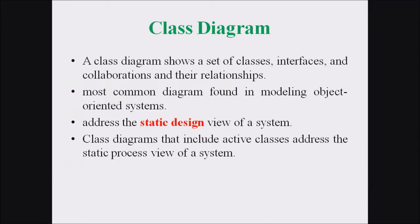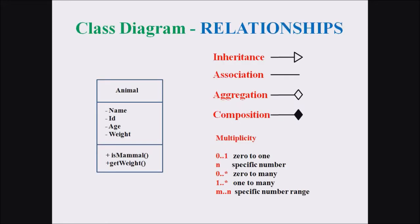A class diagram shows a set of classes, interfaces, and collaborations and their relationships. The most common diagram found in the modeling of object-oriented systems is a class diagram, and it represents the static design of a system. The class diagram includes the active classes and addresses the static process view of a system. A class in a class diagram can be represented with the help of a rectangular representation, and this rectangle has three different compartments. The topmost compartment represents the class name, the middle compartment represents the different attributes.